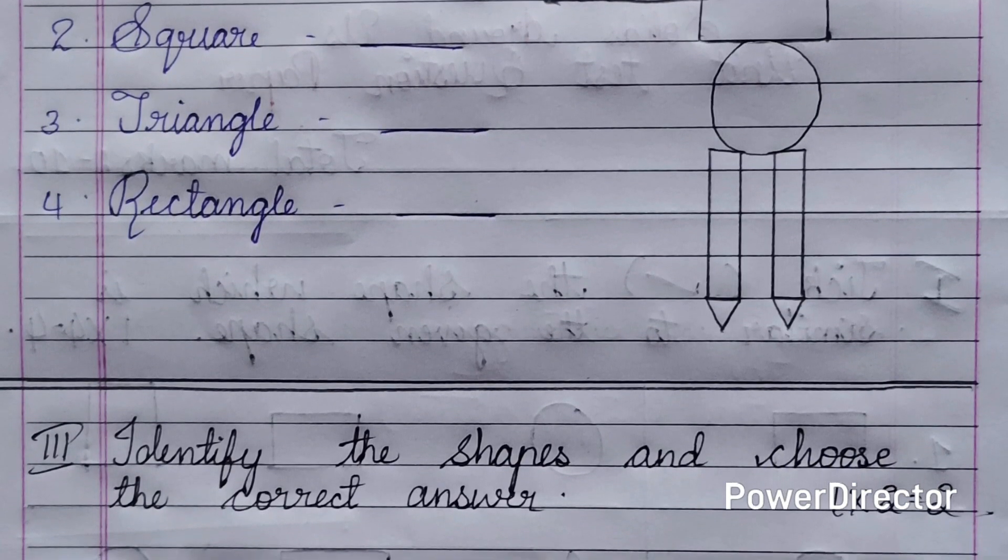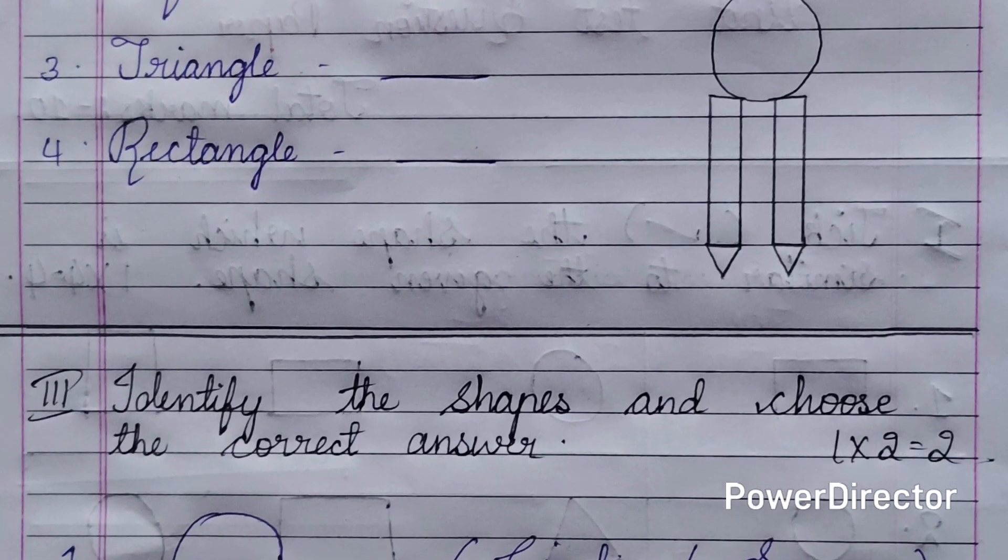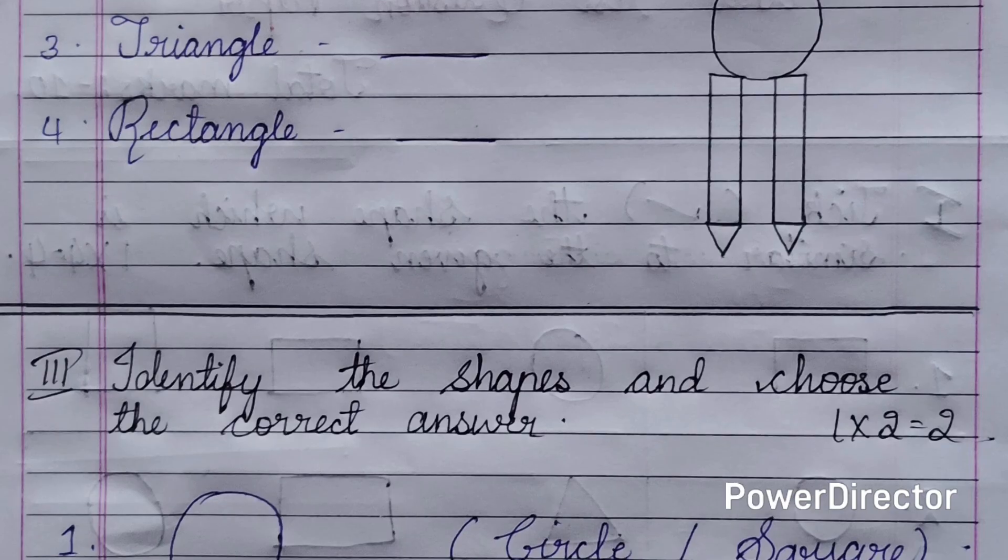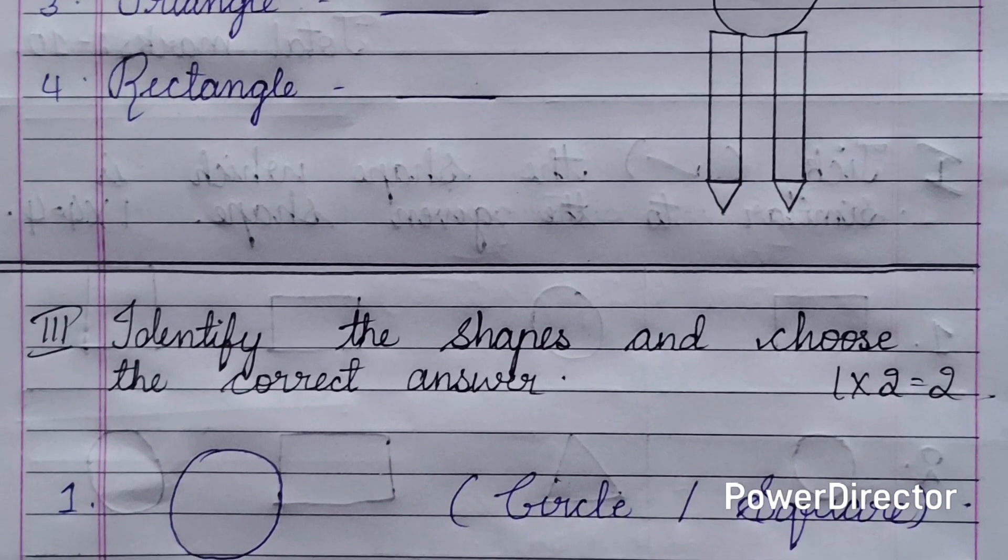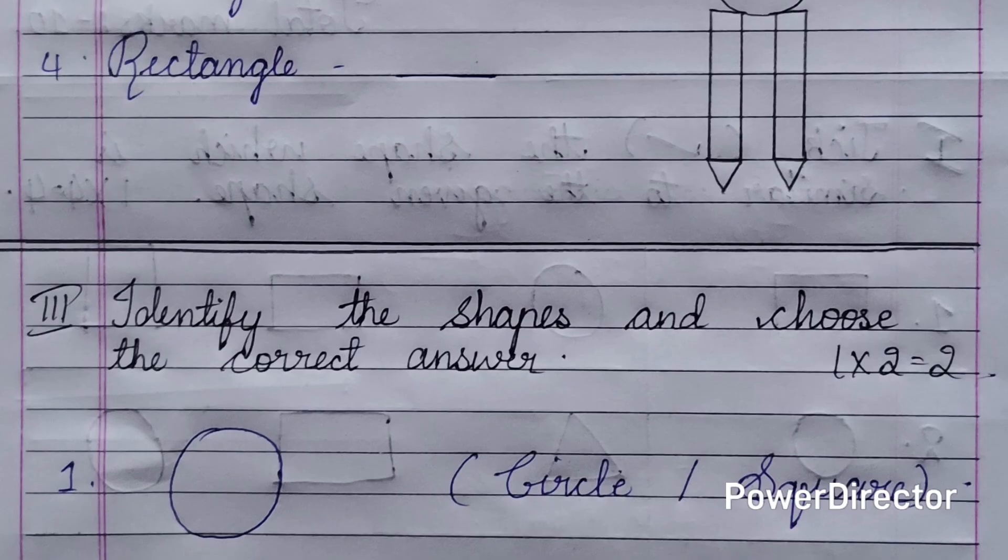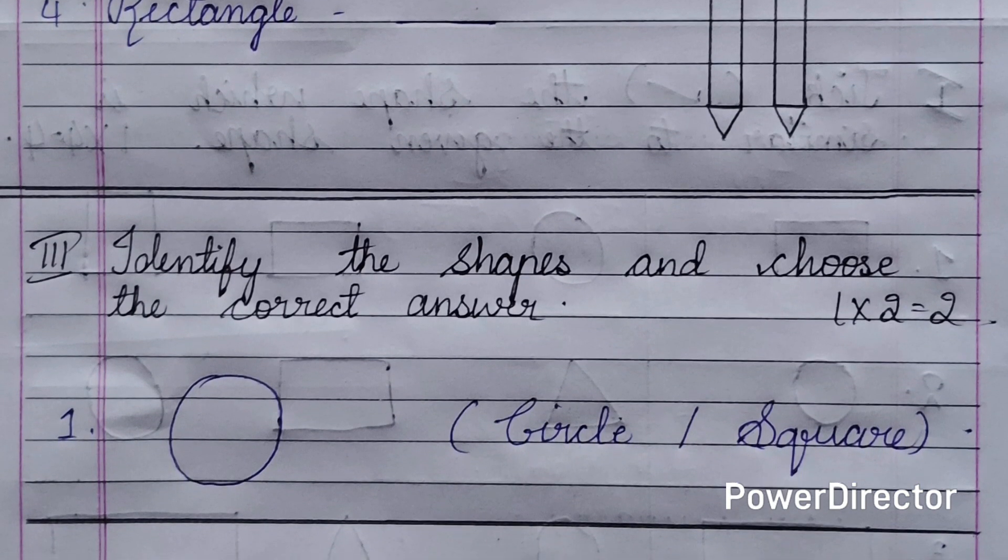The third question is: identify the shapes and choose the correct answer. There are two questions, each carrying one mark, for two marks total. Number one shows a circle with two options: circle or square. You need to tick mark the correct option.